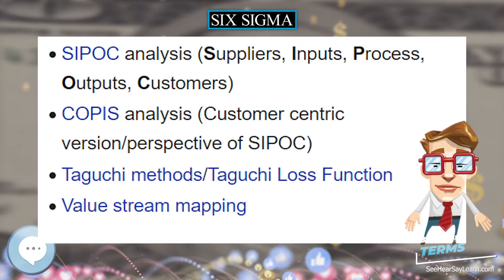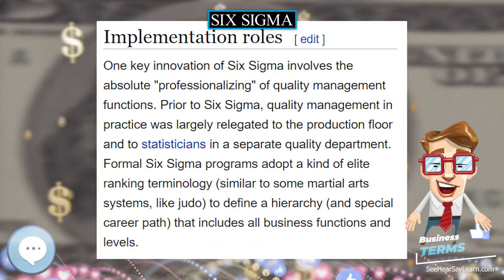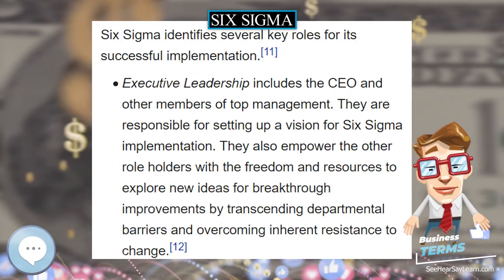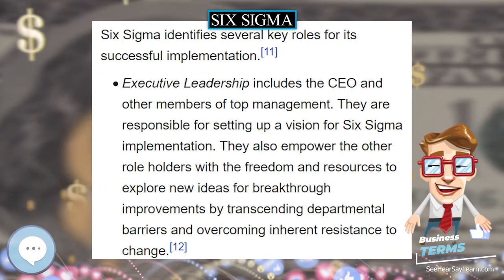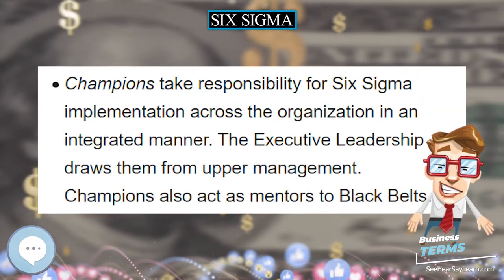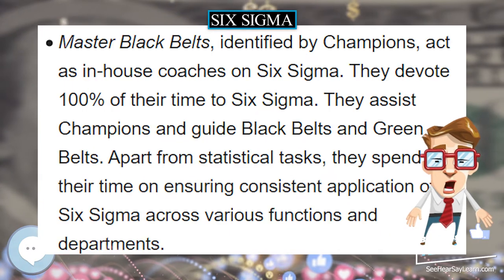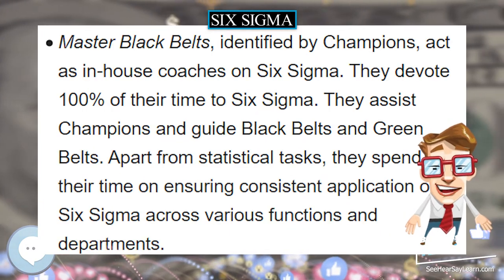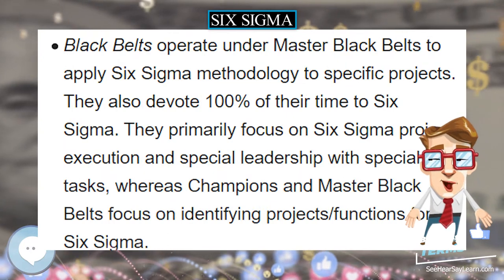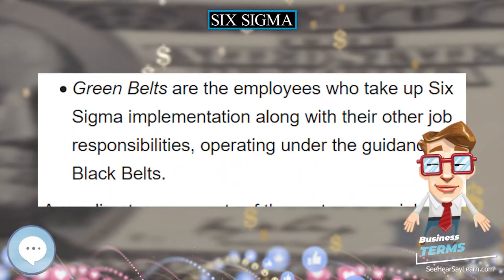The 3.4 DPMO is based on a shift of ±1.5 Sigma explained by Dr. Mikel J. Harry. This figure is based on the tolerance in the height of a stack of disks. Six Sigma's implicit goal is to improve all processes, but not to the 3.4 DPMO level necessarily. Organizations need to determine an appropriate Sigma level for each of their most important processes and strive to achieve these.